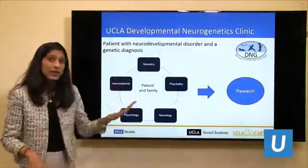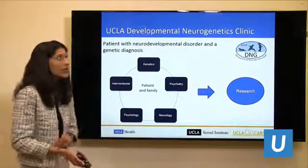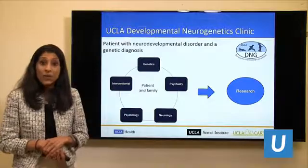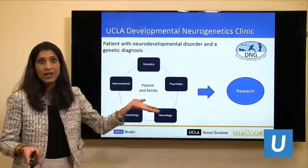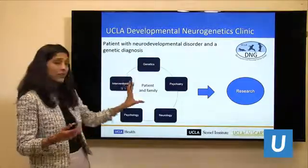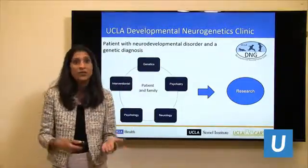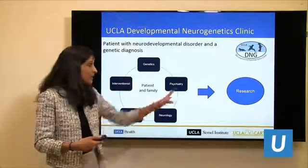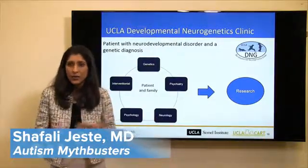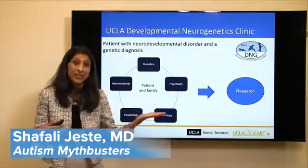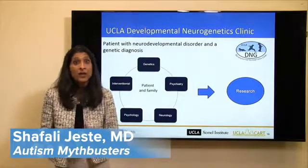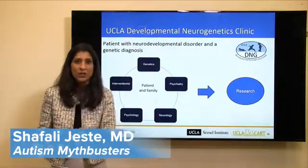We recently developed a clinic at UCLA called the Developmental Neurogenetics Clinic, providing one multidisciplinary place for families whose children have a genetic condition and also have autism. We see the children with genetics, psychiatry, neurology, and psychology, and provide guidance on what that genetic condition might mean. We also tie them into research — clinical trials, and studies examining what different genetic changes mean for brain development and whether there are specific patterns of behavior characteristic of that genetic condition, helping us better target treatments.